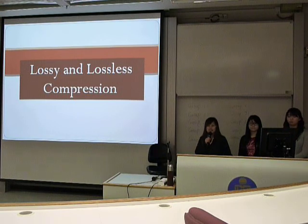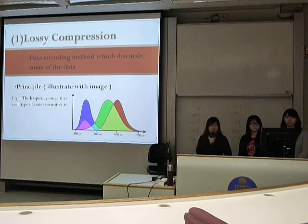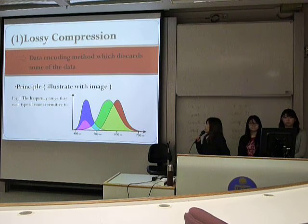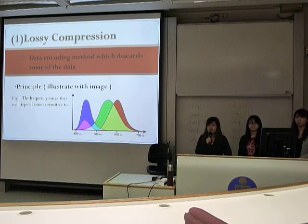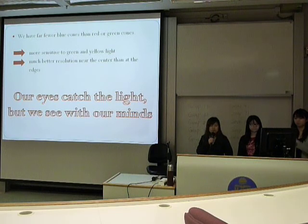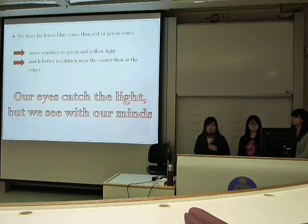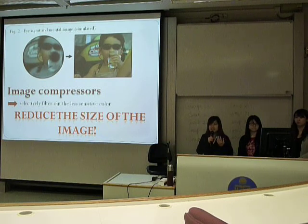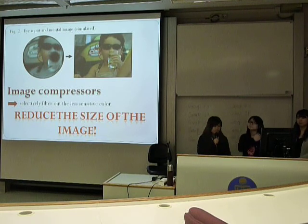Now I am going to tell you what is lossy and lossless compression. The definition of lossy compression is to discard some of the data in the data encoding method. To illustrate lossy compression using images: we have several cones that detect different colors, such as blue cones and green cones. However, we have fewer blue cones than red or green cones, so we are more sensitive to green and yellow lights. Under these circumstances, we can selectively filter out less sensitive colors so that the file size can be compressed, and we can use full bits to represent this file.